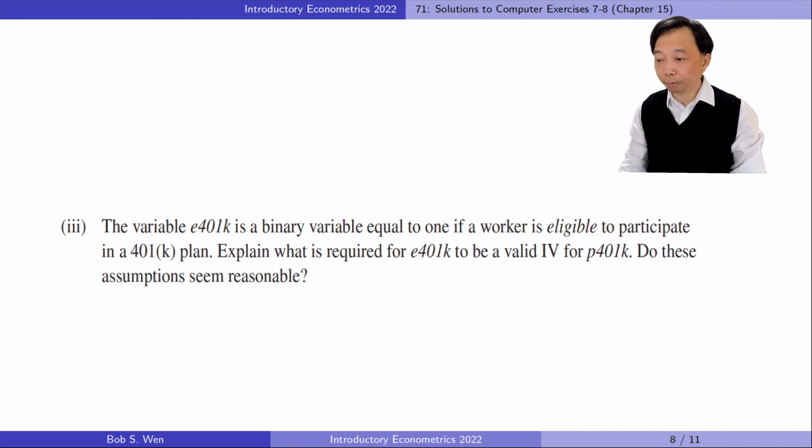The eligibility of the 401k plan and the actual participation in the plan should be positively related, which we can verify in the first stage regression. The instrument relevance requirement is very likely to be met. On the other hand, we could argue whether a worker is eligible to participate in the 401k plan is uncorrelated with the error term, because the eligibility mainly depends on the requirement set by the government rather than the worker's desire. If this is the case, the instrument exogeneity requirement also holds, and the eligibility of the plan is a valid IV for the participation in the plan.